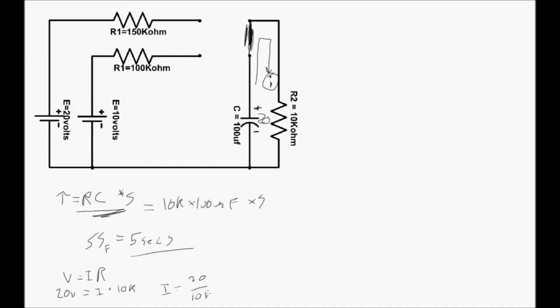20 over 10k is 2 milliamps. So the current, the instant this new circuit is closed will be 2 milliamps. And as the capacitor is discharged, that 2 milliamps will drop to zero after 5 seconds.